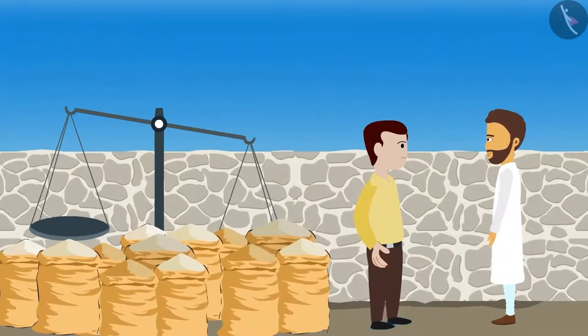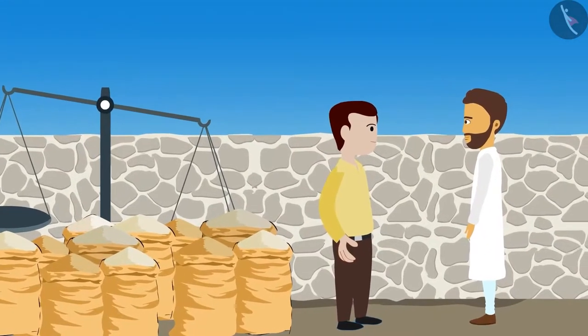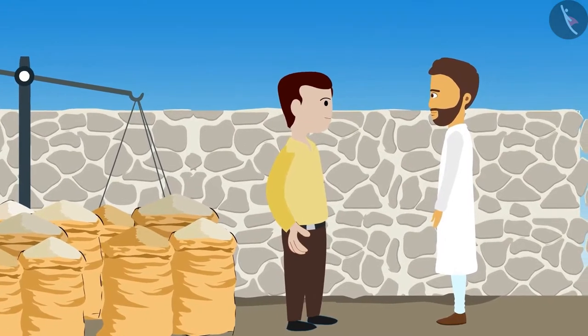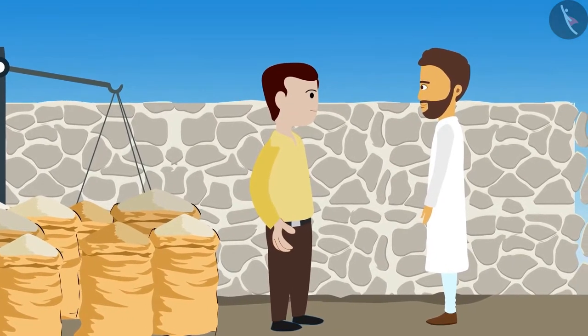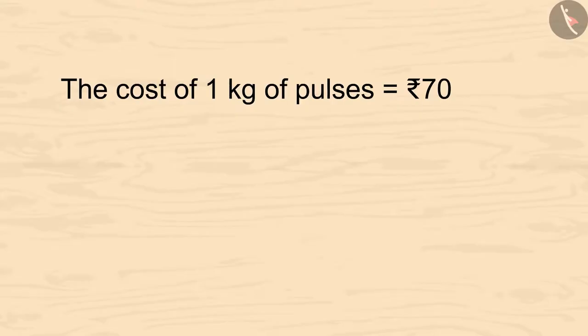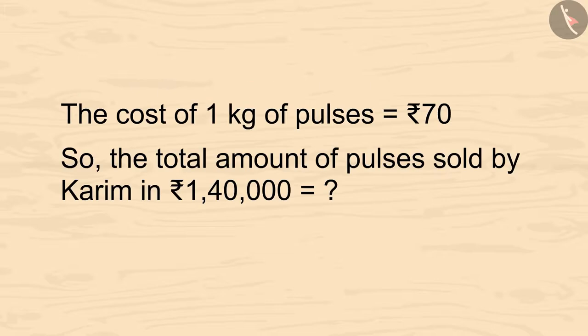Look, Karim is going to the market to sell his pulses. The shopkeeper gives him 1 lakh 40,000 rupees. Karim is very happy! Kids, if the selling price of 1 kg of pulses is 70 rupees, then how many kilograms of pulses did Karim sell? You can pause the video and calculate it.